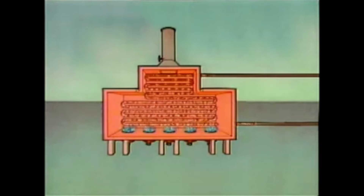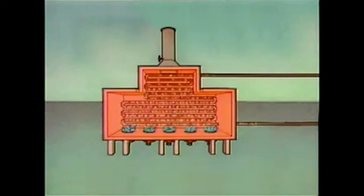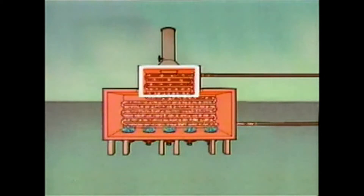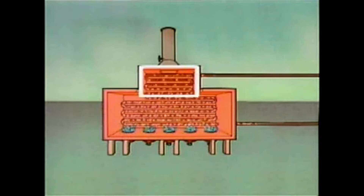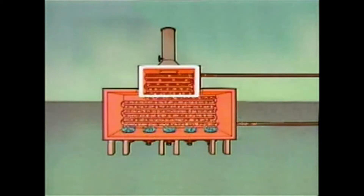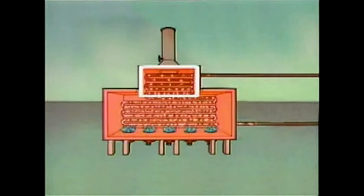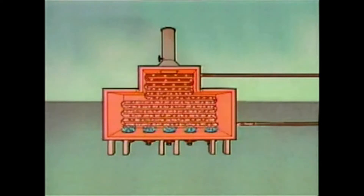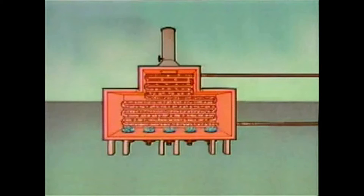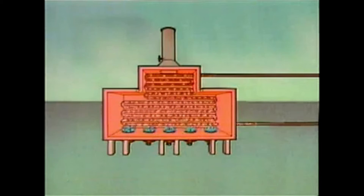Furnaces are used to heat many different types of process fluids. As the process fluid circulates through the tubes inside the furnace, it receives heat that is produced by burning fuel. The process fluid enters the furnace through the tubes in the convection section. This arrangement allows the fluid to be preheated by the combustion gases before it reaches the radiant section of the furnace. Preheating the process fluid makes it possible to bring it up to the desired temperature while burning less fuel, making the furnace more efficient.